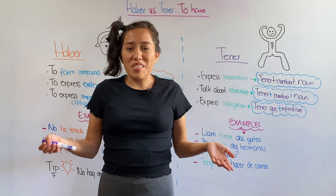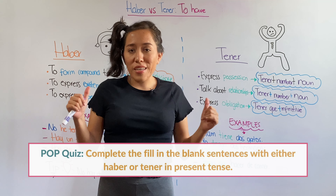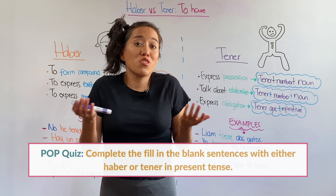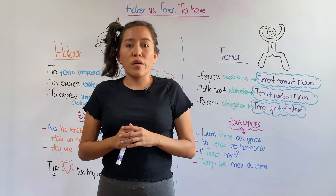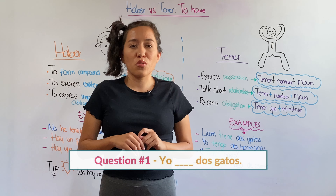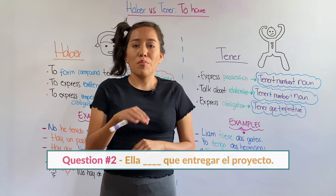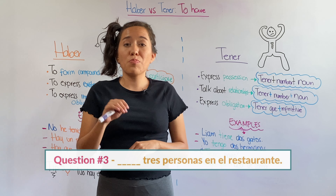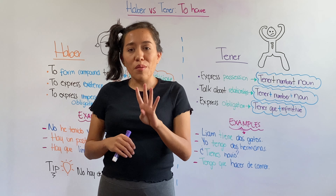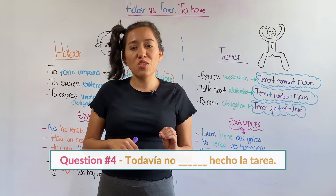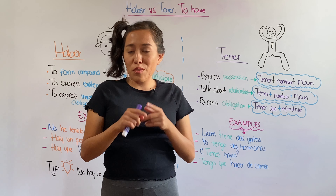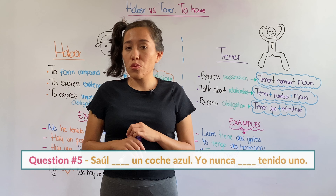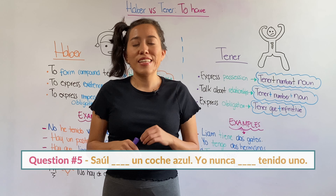Now that you understand the differences, I'm going to give you a quiz. I'll give you fill-in-the-blank sentences and you complete them based on context. Number one: 'Yo ___ dos gatos.' Number two: 'Ella ___ que entregar el proyecto.' Number three: '___ tres personas en el restaurante.' Number four: 'Todavía no ___ hecho la tarea.' Number five has two blanks — 'Saúl ___ un coche azul. Yo nunca ___ tenido uno.' Leave your answers in the comments and I'll give you feedback if you need it.